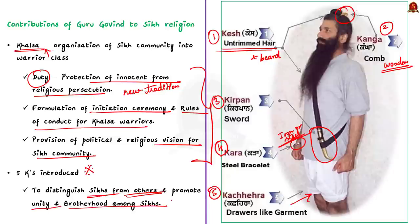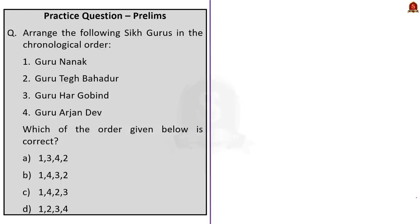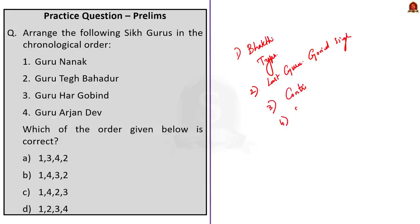With the creation of Khalsa, Guru Gobind Singh abolished all existing social divisions in line with the teachings of the first Sikh Guru, Guru Nanak Dev. This led Sikhism to develop as a religion which promoted social oneness and togetherness. In this discussion, we saw about the Bhakti movement and its types, Guru Gobind Singh and how his sons died, his important contributions including the Khalsa and the Five K's, and the significance of those contributions. Now let us move on to the next article discussion.